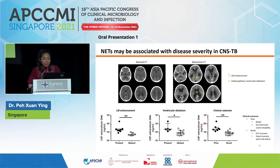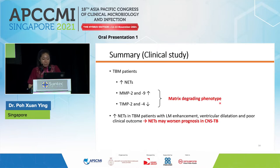I next investigated whether NETs are associated with disease severity in CNS TB. Interestingly, TBM patients with leptomeningeal enhancement, ventricular dilatation, or poor clinical outcome have higher CSF NETs than patients without those features or with good outcomes. This suggests that NETs may be associated with disease severity in CNS TB. In summary, TBM patients have higher CSF NETs, MT-PRIN, and gelatinases MMP2 and MMP9, but decreased TIMP2 and TIMP4, demonstrating a matrix-degrading phenotype. Moreover, higher NETs in patients with worse features suggests NETs may worsen prognosis in CNS TB.